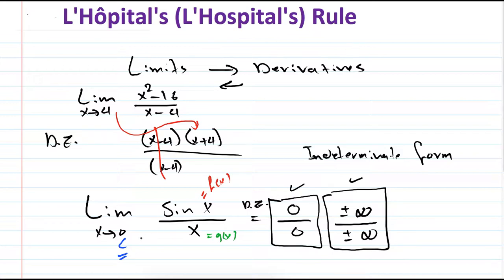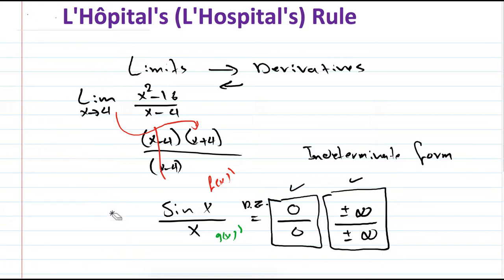If you have these two situations, we use L'Hôpital's rule. Instead of evaluating c into your functions to get 0/0 or ±∞/±∞, find the derivatives. Find the derivative of the first function and put it over the derivative of the second function, then evaluate. So instead of the limit as x approaches c of f(x)/g(x), just find f'(x) over g'(x) and evaluate c. You'll get a different answer instead of 0/0, and that will be the limit. If you still get 0/0 or ±∞/±∞, apply L'Hôpital's rule again using the second derivative.